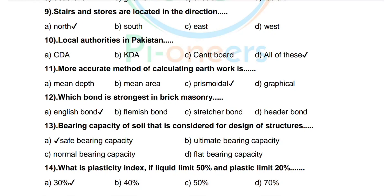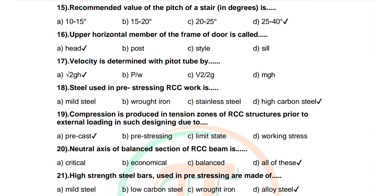Question 15: Recommended value of the pitch of a stair in degrees. Options: 10 to 15, 15 to 20, 26 to 25, 25 to 40. Correct answer is 25 to 40 degrees. Question 16: The horizontal member of the frame of a door is called. Options: head, post, style, sill. Correct answer is head.